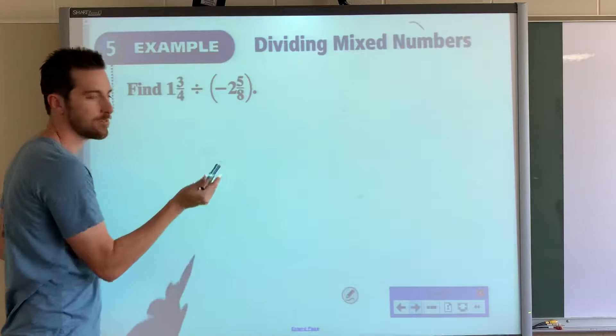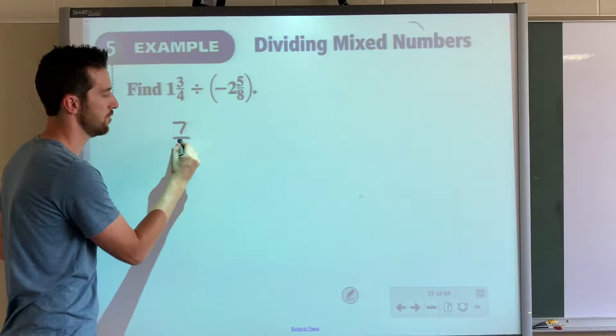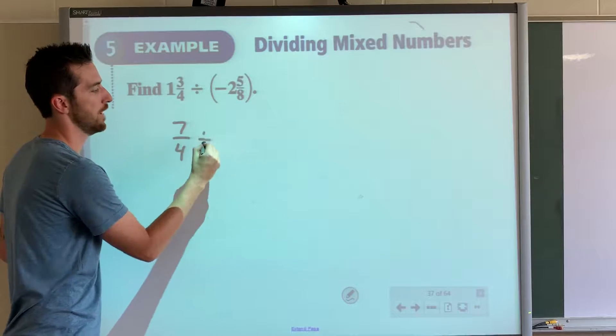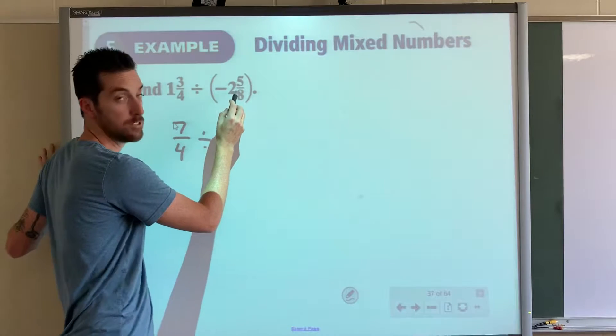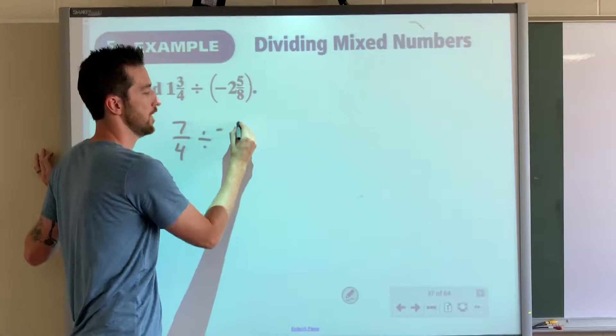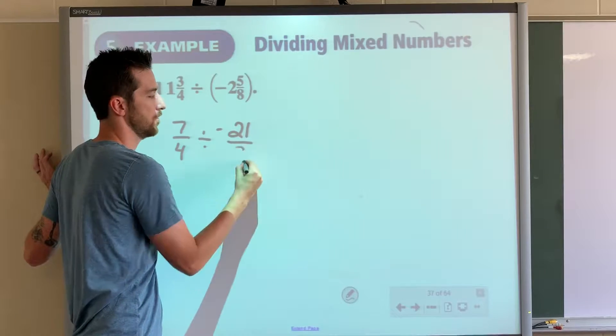4 times 1 is 4, plus 3 is 7, so 7 fourths divided by—let's see—8 times 2 is 16, plus 5 is 21, so negative 21 over 8.